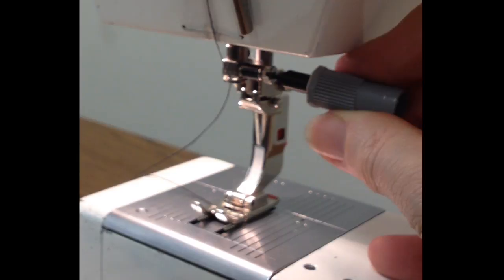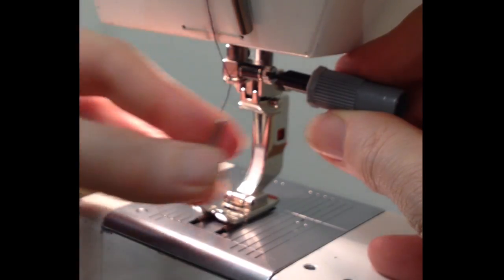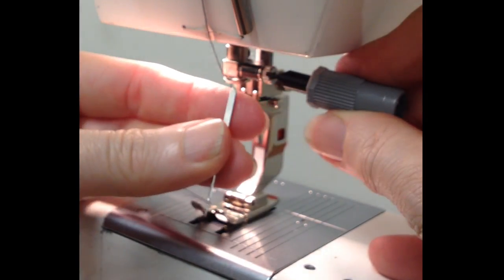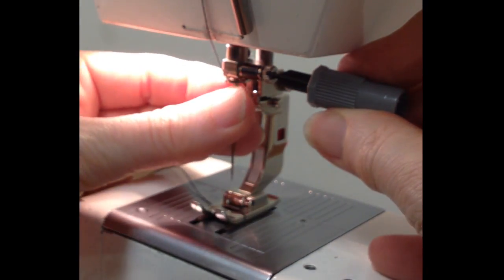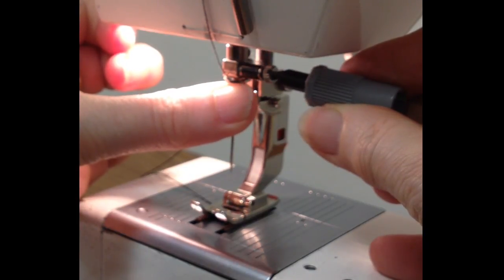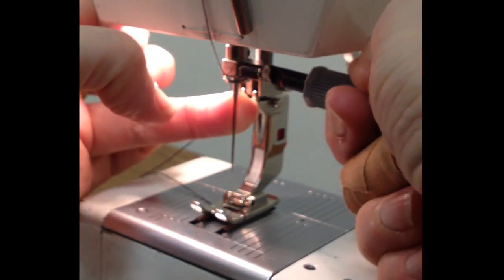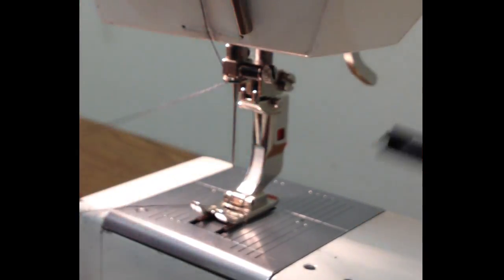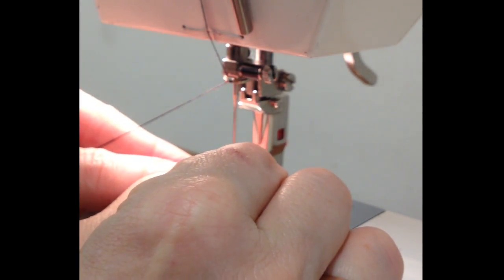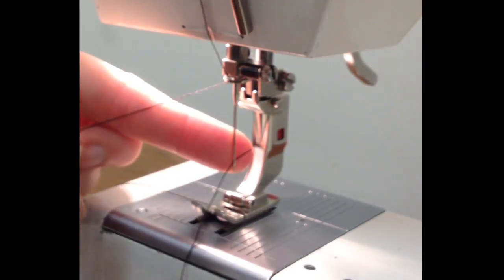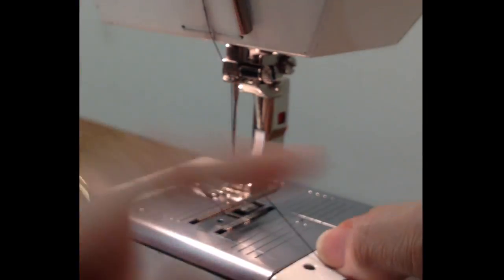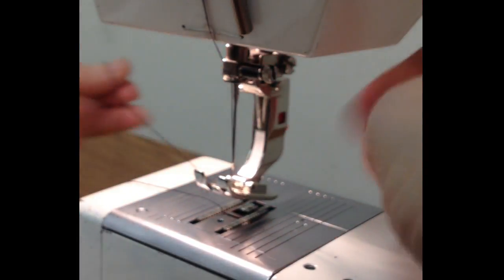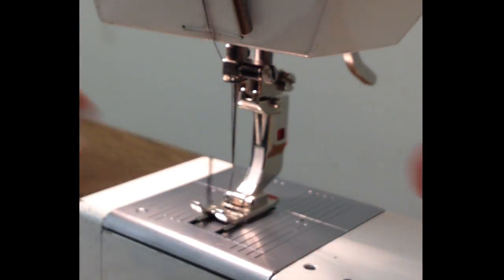Discard that into the sharps container and then with the new needle, with the flat part on the shaft flat to the back, slide that up into there, tighten the screw and re-thread the eye of the needle. Pull the thread to the back and you're ready to sew.